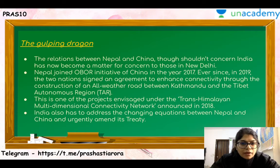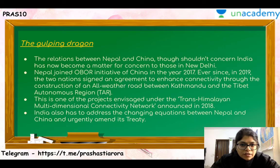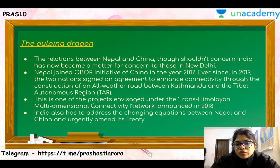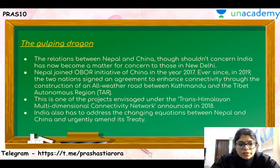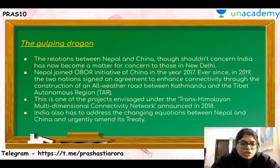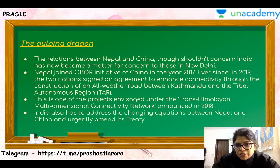Talking about the dragon — China has, of course, been one of the major problems in the ties we have with our neighbours. Nepal joined China's One Belt One Road initiative in 2017, and in 2019, the two nations signed an agreement to enhance connectivity through the construction of an all-weather road between Kathmandu and the Tibet Autonomous Region. This is one of the projects envisaged under the Trans-Himalayan Multi-Dimensional Connectivity Network announced in 2018. India really needs to address the changing equations between Nepal and China, and urgently amend the treaty to ensure stability in India-Nepal ties.